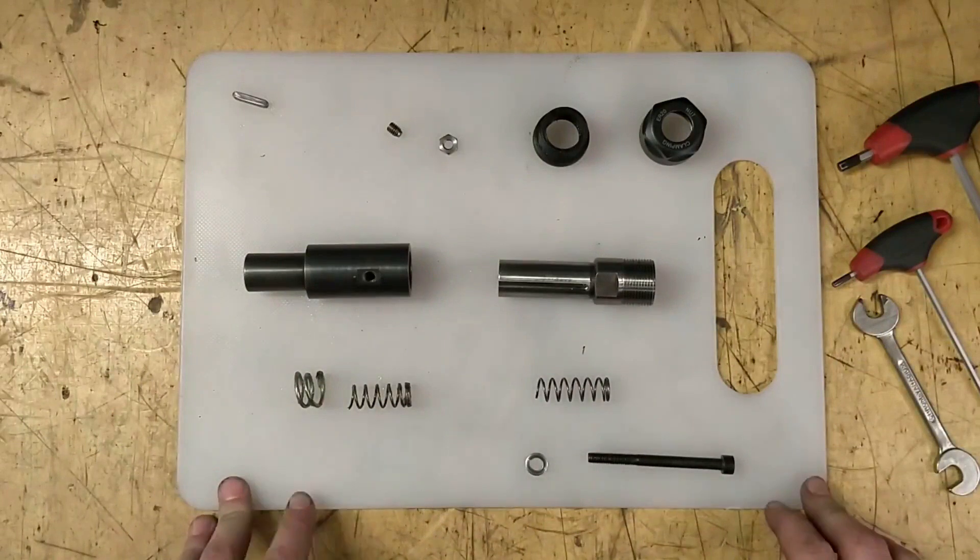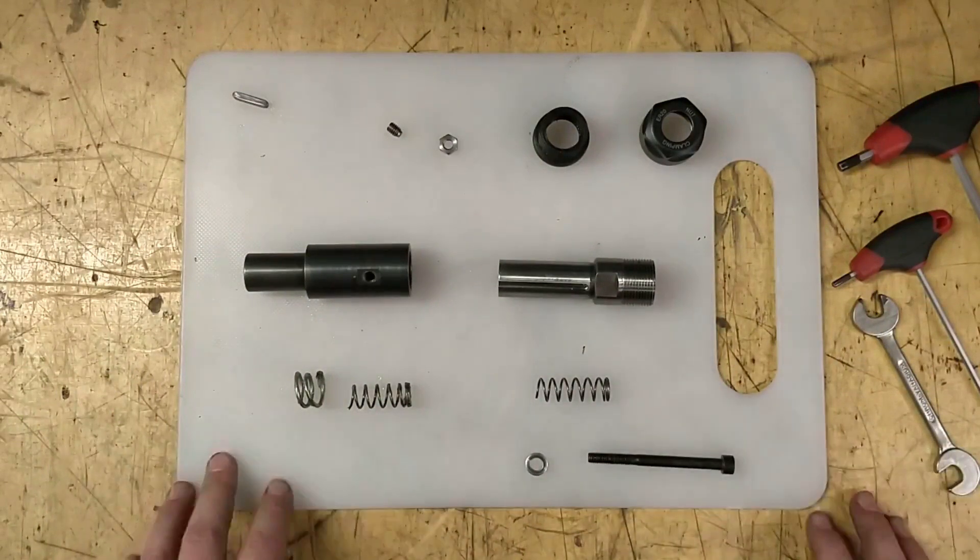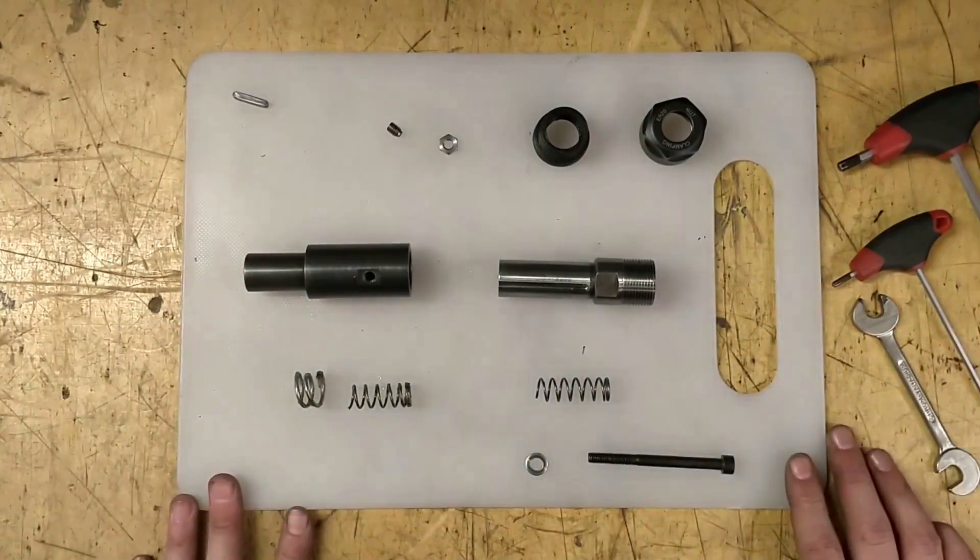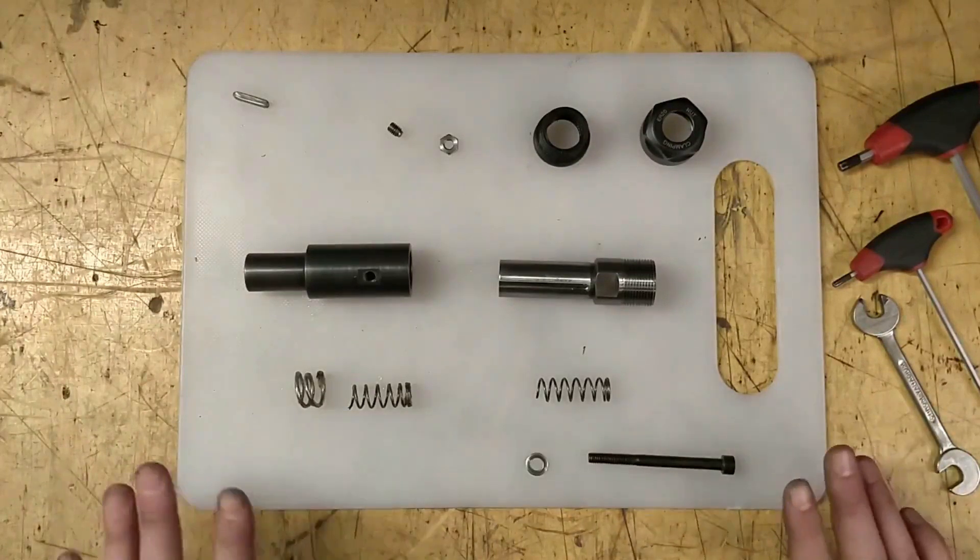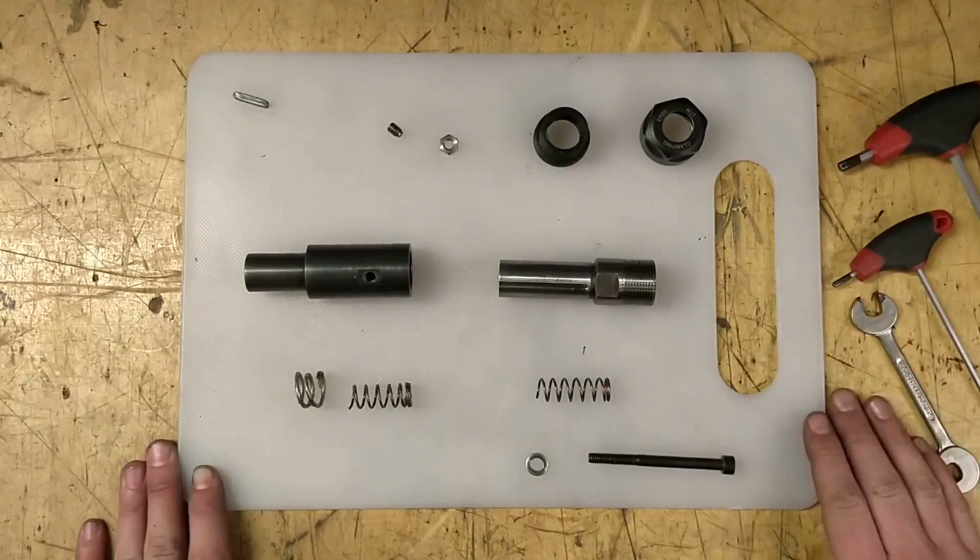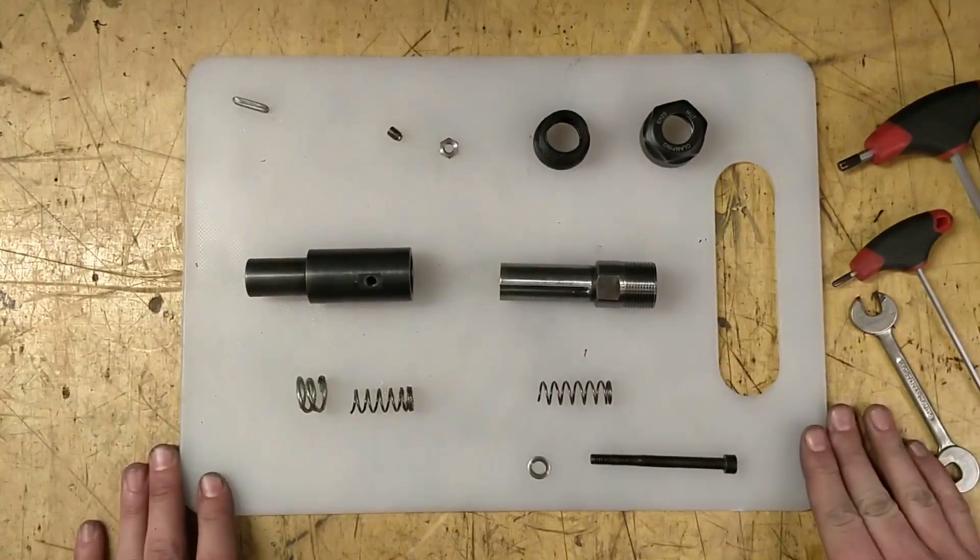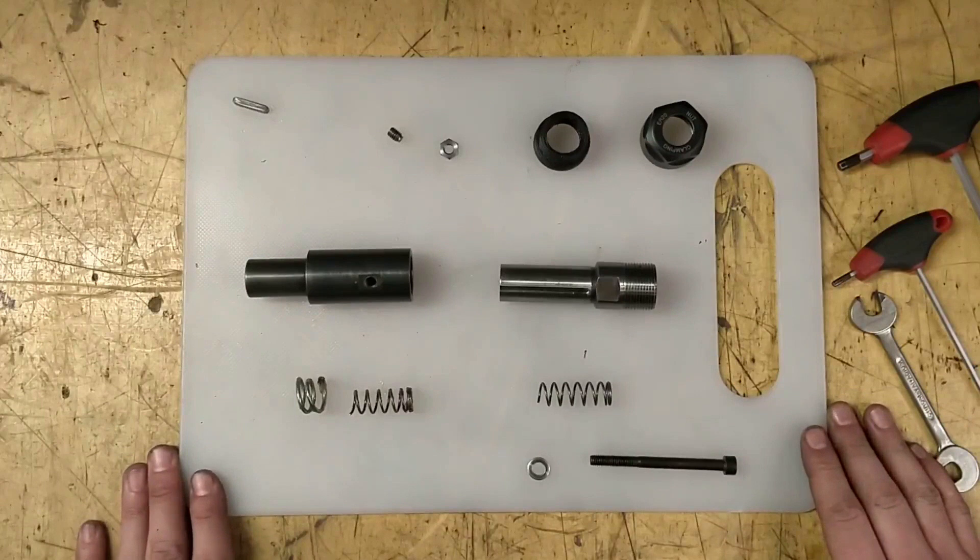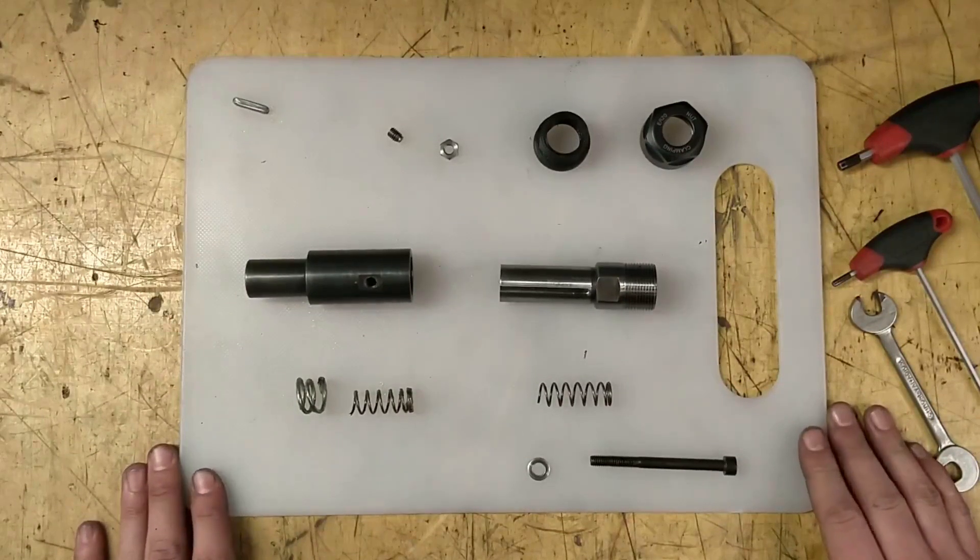So no matter why, if I have some differences between the encoder reading and the actual spindle position, this will break my tap when doing rigid tapping.